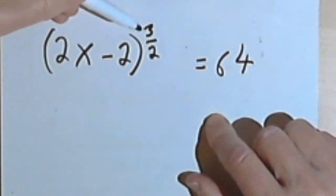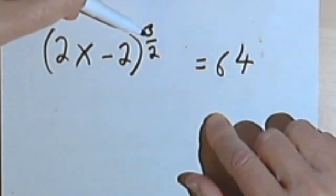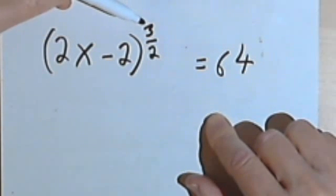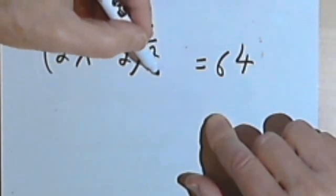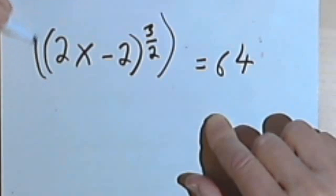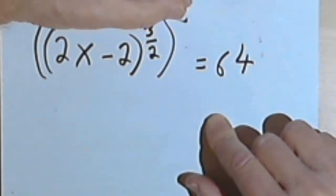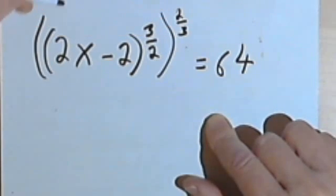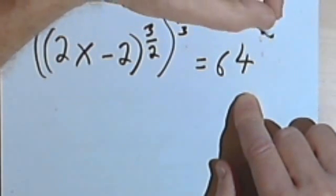Now we've been dealing with things raised to the 1 half power. 3 halves power doesn't make any difference. It doesn't matter what your exponent is. To get rid of it we're going to multiply it by its reciprocal. So let's see what happens. We've got 3 halves, the reciprocal is going to be 2 thirds. So I'm going to take the entire left side of the equation and raise it to the 2 thirds power. That means I have to take the right side of the equation and also raise it to the 2 thirds.